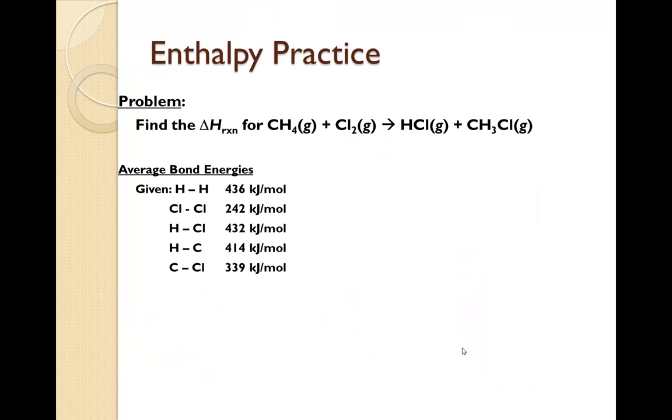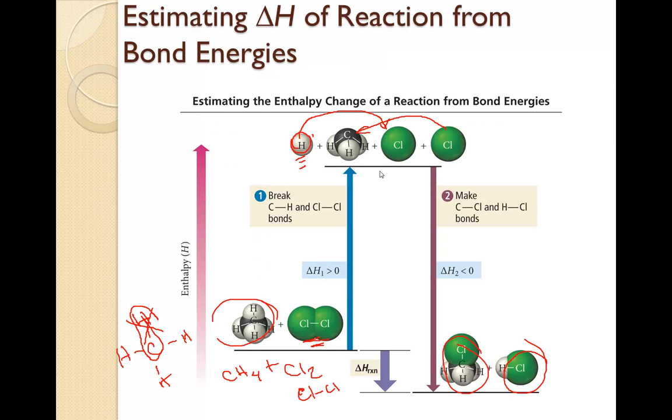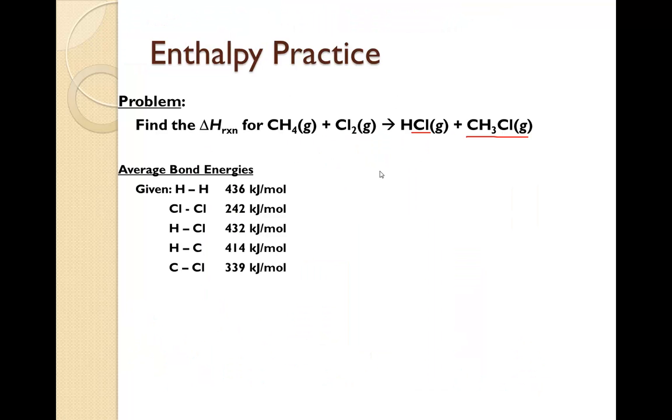So we have CH4 plus Cl2 yields HCl and CH3Cl. There's a couple different ways of doing it. We can do just like we did here where we only broke the one bond that was being broken and formed. Let's take a look.